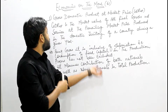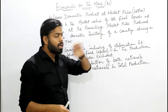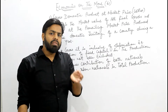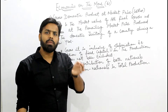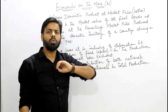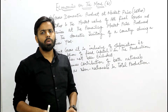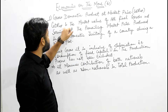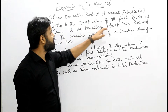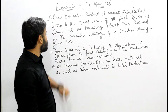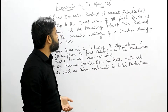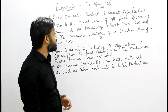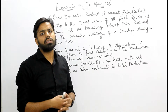पहला discussion: GDP at MP, यानि Gross Domestic Product at Market Price। Gross domestic product का मतलब था कि final goods and services जो country की boundary के अंदर बनाये जा रहे हैं — देशवासियों द्वारा और बाहर के लोगों द्वारा — देश की boundary के अंदर किसी भी तरीके का production हो रहा है, तो वो GDP का part होता था। GDP at market price is the market value of all final goods and services at the prevailing market price produced in the domestic territory of a country during the given year।